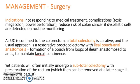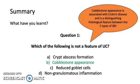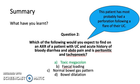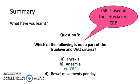Let's summarise with a few questions. Which of the following is not a feature of UC? Cobblestone appearance — cobblestone appearance is a feature of Crohn's. Which would you expect to find on an abdominal x-ray in a patient with UC presenting with bloody diarrhoea, abdominal pain, and who is peritonitic and tachypneic? Toxic megacolon — this patient has most probably had perforation following a flare of their UC. Which of the following is not part of the Truelove and Witts criteria? The answer is CRP — ESR is used in the criteria, not CRP.